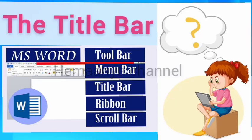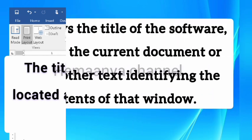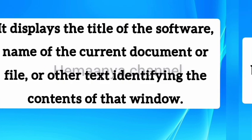Hi friends, today we discuss some points about the title bar. The title bar is a horizontal bar located at the top of a window in a GUI. It displays the title of the software, name of the current document or file, or other text identifying the contents of that window.